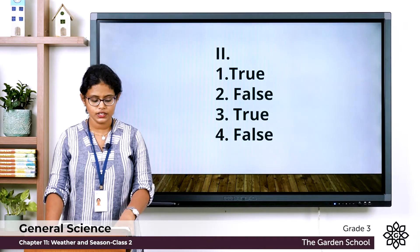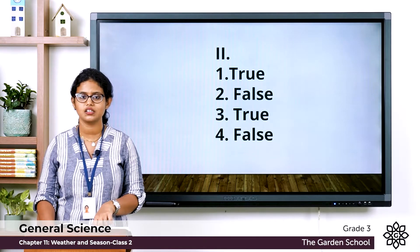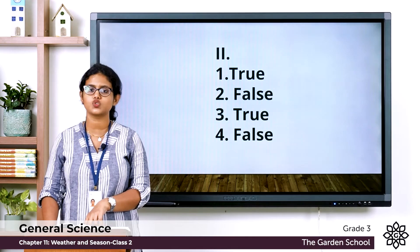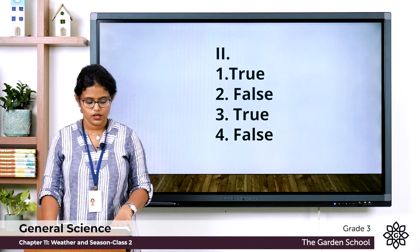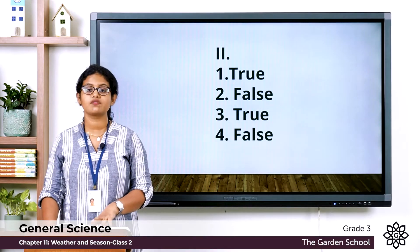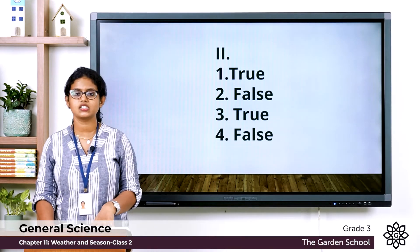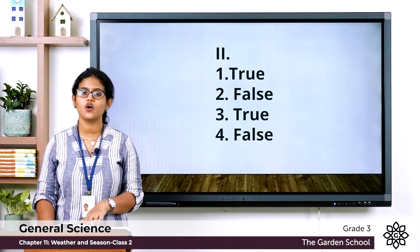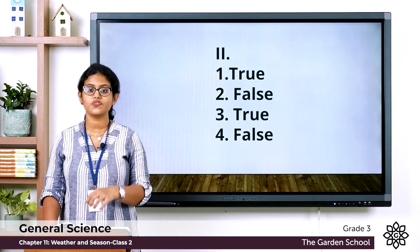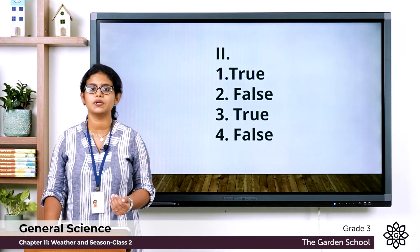Third — rice is grown during the rainy season. The answer is true. Fourth — all parts of a country have similar weather. The answer is false; all parts of a country do not have similar weather.